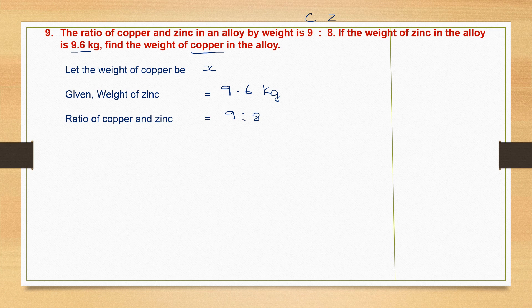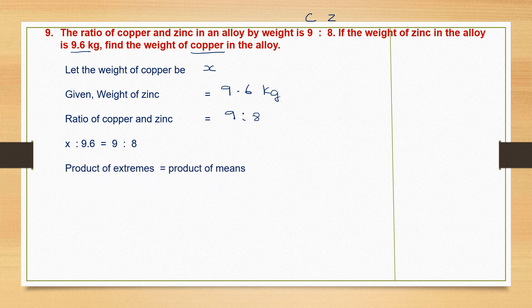Now we have to form a proportion. The left-hand side and the right-hand side should follow the same order. On the right-hand side it is copper and zinc — so on the left-hand side also we should have copper and zinc. We said let the weight of copper be x, so copper is first and zinc is second. The order on both sides is the same: copper first and then zinc. Once we make it a proportion, we follow product of extremes equals product of means.